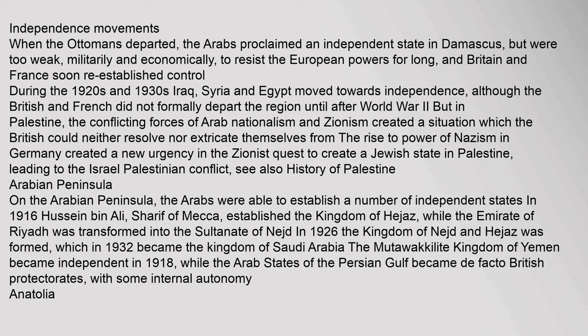Arabian Peninsula: The Arabs were able to establish a number of independent states. In 1916, Hussein bin Ali, Sharif of Mecca, established the Kingdom of Hejaz, while the Emirate of Riyadh was transformed into the Sultanate of Nejd in 1926. The Kingdom of Nejd and Hejaz was formed, which in 1932 became the Kingdom of Saudi Arabia. The Mutawakalite Kingdom of Yemen became independent in 1918, while the Arab states of the Persian Gulf became de facto British protectorates with some internal autonomy.